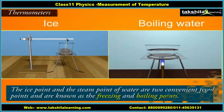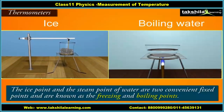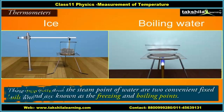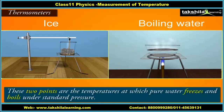The ice point and the steam point of water are two convenient fixed points, known as the freezing and boiling points. These two points are the temperatures at which pure water freezes and boils under standard pressure.